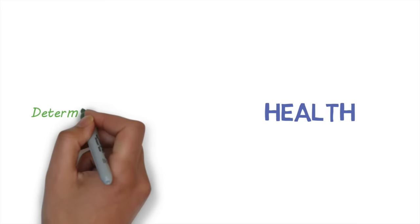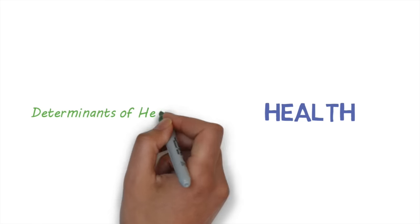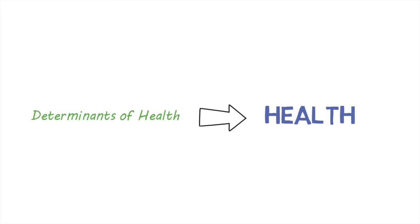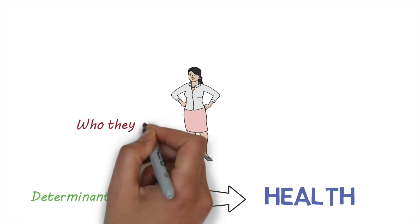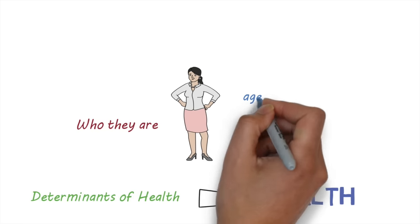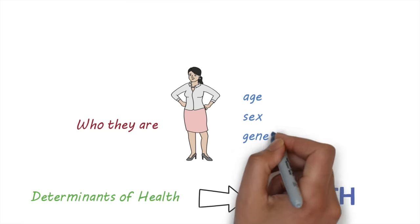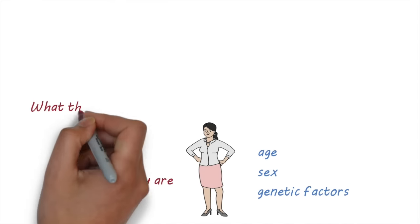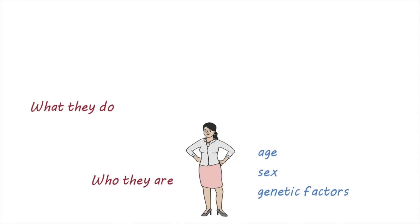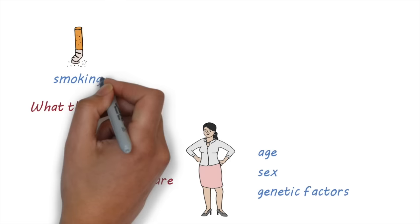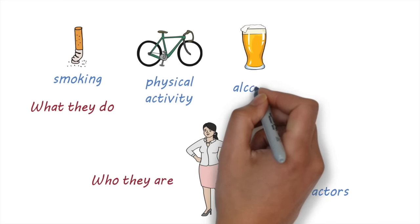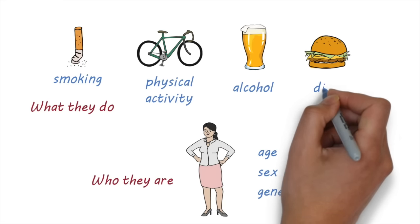A person's health is influenced by a range of factors called determinants of health. These include who they are — individual factors such as age, sex, and genetic makeup — and also what they do. This includes their health behaviors such as smoking, physical activity, alcohol use, and diet.